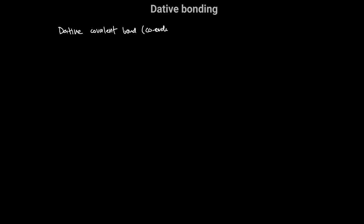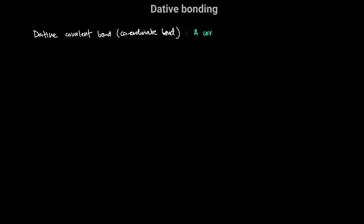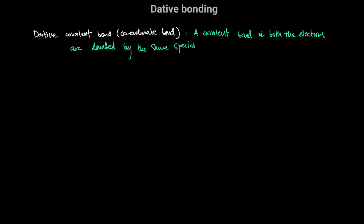Here we're going to look at dative bonding. A dative covalent bond, also known as a coordinate bond, is a covalent bond in which both the electrons are donated by the same species. That species donates a lone pair of electrons — it results from the donation of a lone pair of electrons.